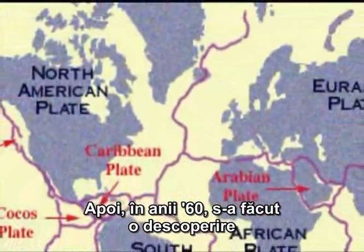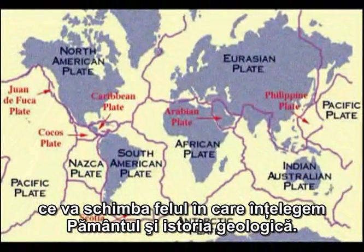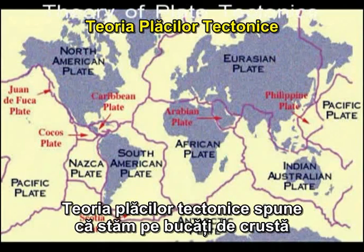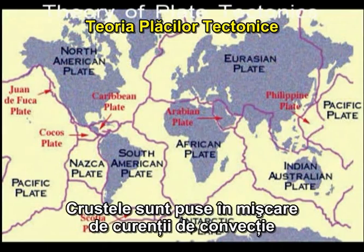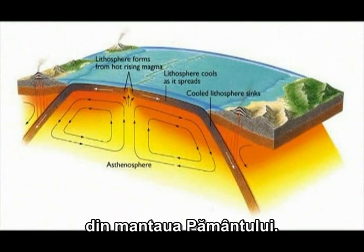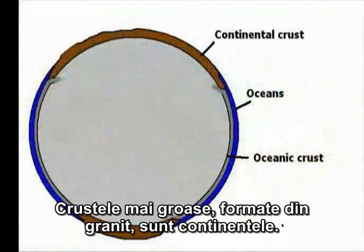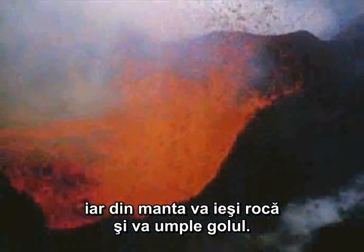Then in the 1960s, researchers made a discovery that transformed our understanding of the earth and its geological history. The theory of plate tectonics concludes that we live on pieces of crust floating on partially melted rock. As they drift around the earth's surface, these crustal plates are likely driven by convection currents in the earth's upper mantle. Thicker crustal plates made mostly of granite make up our continents; the oceans mostly fill the lower and thinner crustal plates made of basalt. In some places these plates are moving apart and new rocks well up from the earth's mantle to fill the gap.